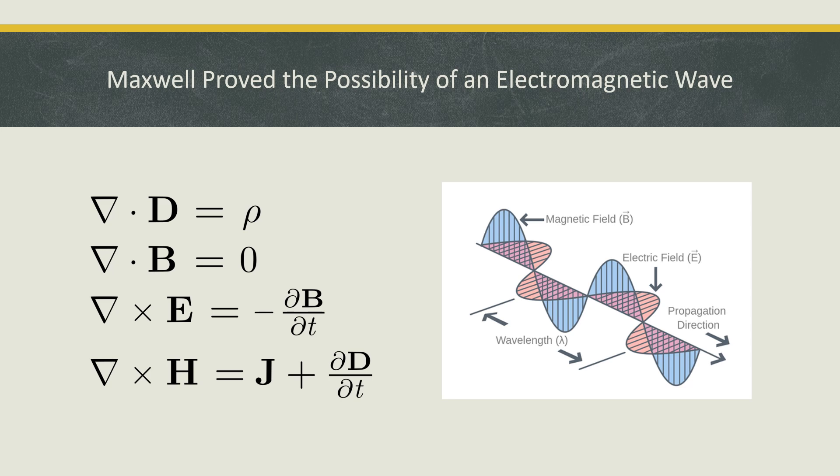The story of the special theory of relativity begins with James Clerk Maxwell, who collected and consolidated many laws of electricity and magnetism into a single set of laws. When four such laws were put together, Maxwell showed the possibility of electromagnetic waves, which could be self-propagating because there were two orthogonal components, each of which created the other. Maxwell computed the speed of this electromagnetic wave and it turned out to be about 186,000 miles per hour.